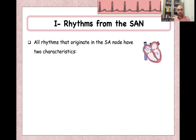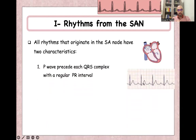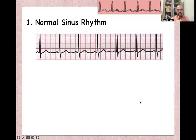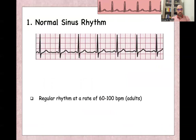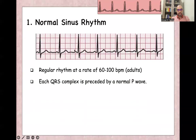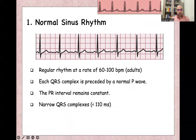Let's start with rhythms from the SA node, which all have the same two characteristics: P-waves precede each QRS, so QRS is preceded by a P-wave and the PR interval is constant. P-wave axis falls between 0 and 90 degrees, so it will be a positive P-wave in lead 2 and negative P-wave in AVR. Normal sinus rhythm is characterized by regular rhythm at a rate of 60 to 100 beats per minute, QRS preceded by a normal axis P-wave, constant PR interval throughout the rhythm, and narrow QRS complexes less than 110 milliseconds.